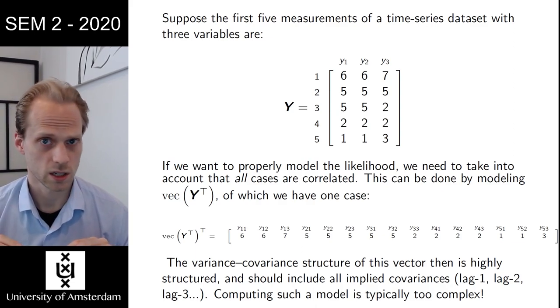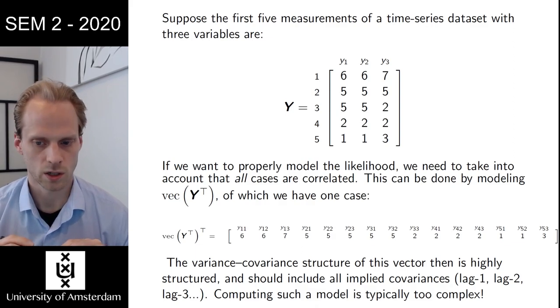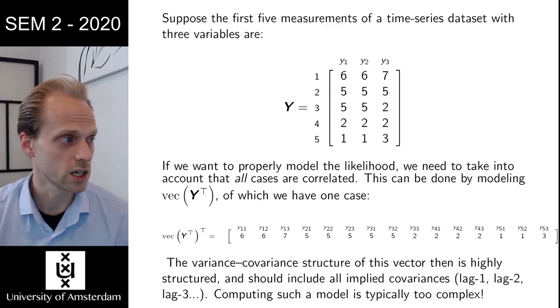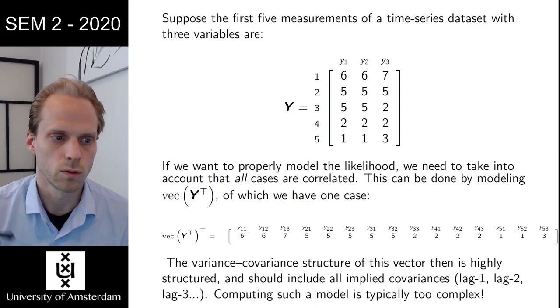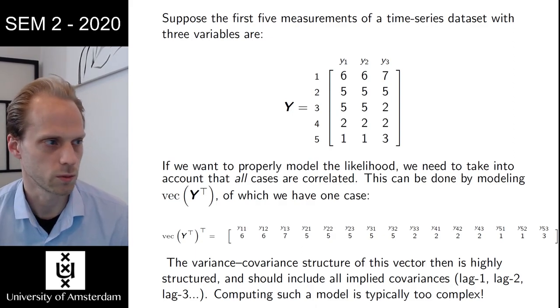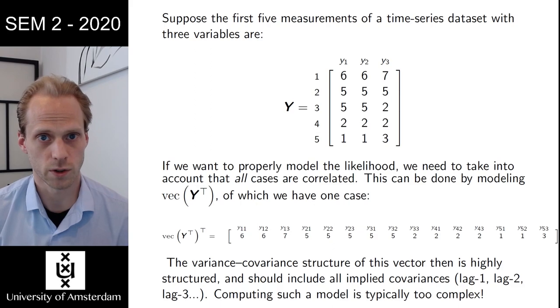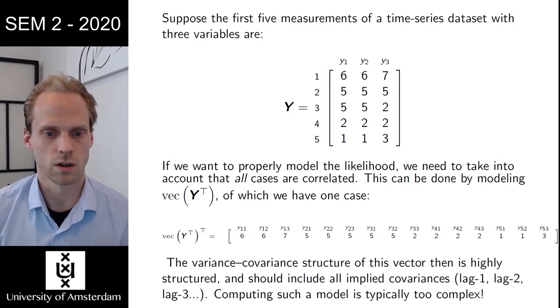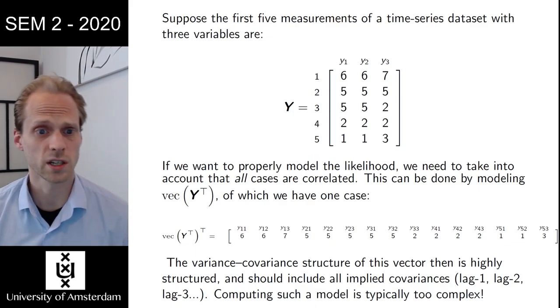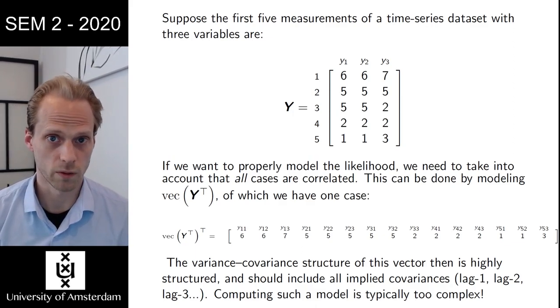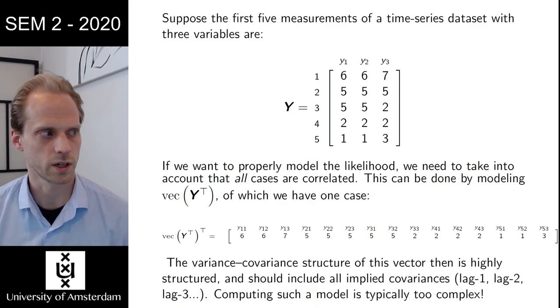That's the actual way to do maximum likelihood estimation in time series analysis. The problem with this is that this can be done, but it's highly complex, and at some point, your software will just explode. Last year, I tried implementing this form in psychonetrics, and it worked for like two variables, maybe three, or like 50 observations at most. Because you need to invert sigma and stuff, that becomes really complicated very fast. This typically doesn't really work very well.